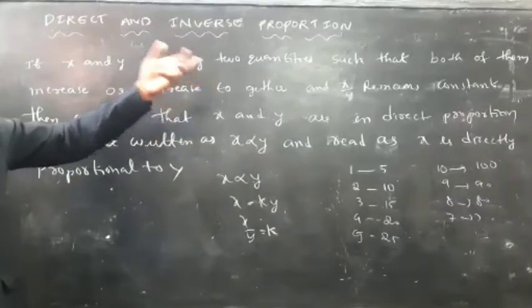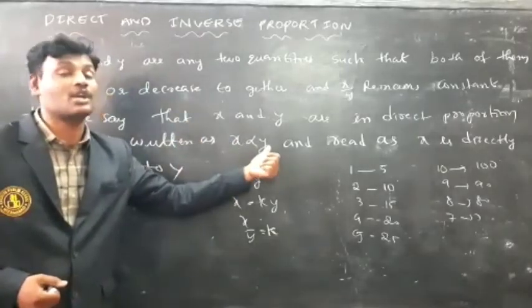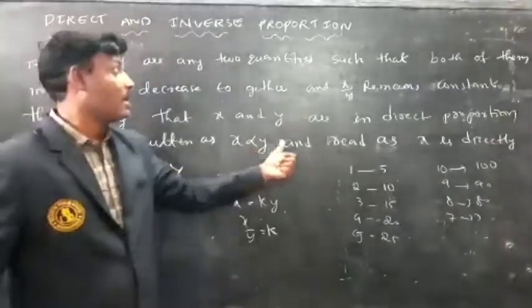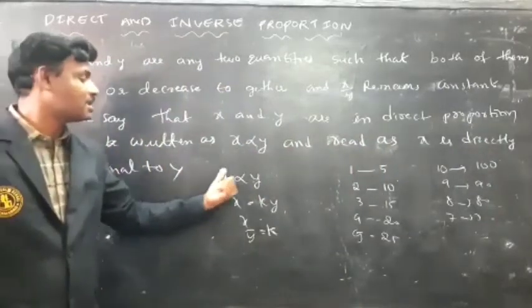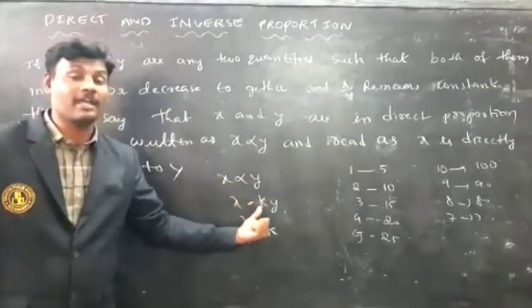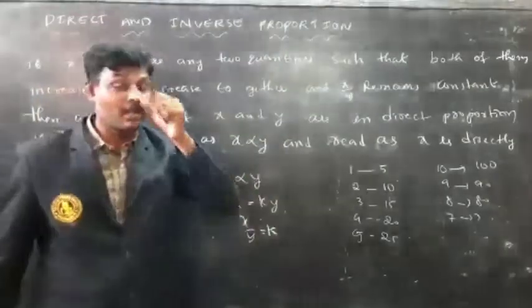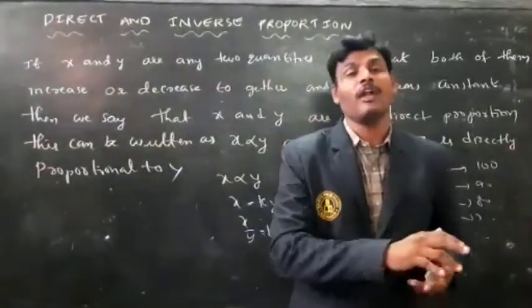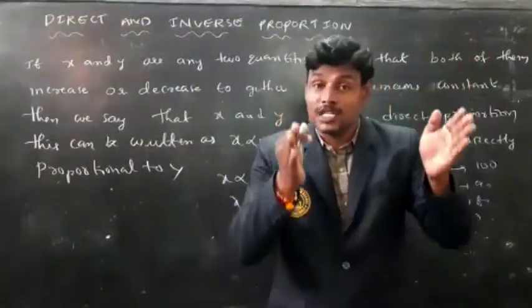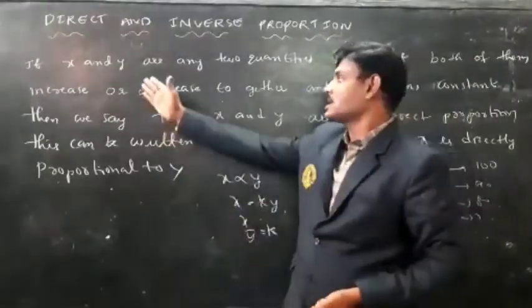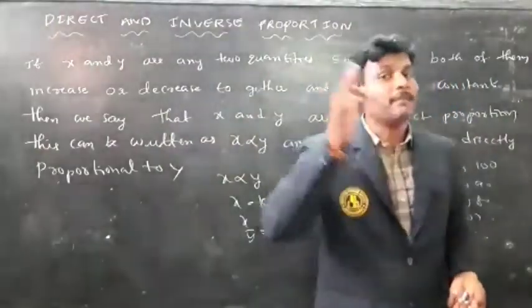And the ratio x by y remains the same, then we say that x and y are in direct proportion. This can be written as x is directly proportional to y. Then x is equal to k times y, where k is a constant term. The ratio x by y remains constant. So direct proportion means: if one quantity decreases another also decreases, if one quantity increases another also increases.